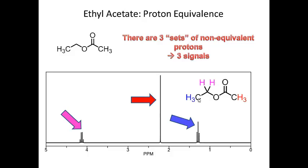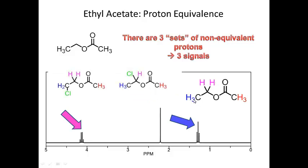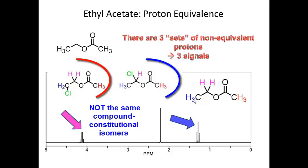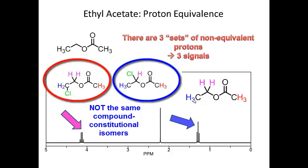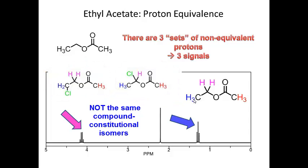The test for non-equivalence is to take one of these protons and replace it with another atom. If you get a constitutional isomer, that means that particular set of protons is not equivalent to the other set. For instance, if I replaced one proton with a chlorine in one location, then did the same in another location, and the two resulting structures are different constitutional isomers, then those two sets of protons are not equivalent.